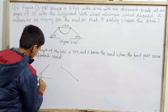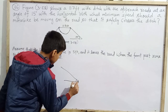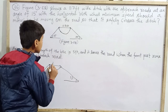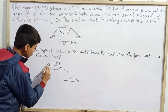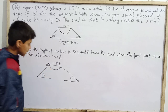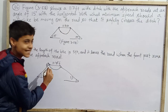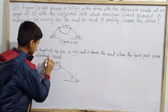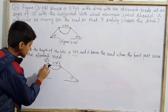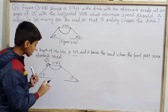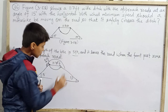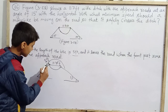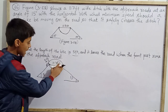Let me redraw this figure: the approach road is at 15 degrees, and there is a ditch whose length is 11.7 feet. A motorbike is approaching and the bike itself is 5 feet long. We assume that the front part of the bike is leaving the road because it enters projectile motion. As the front part of the wheel leaves the road, the rear part also leaves. And the same case applies while landing.